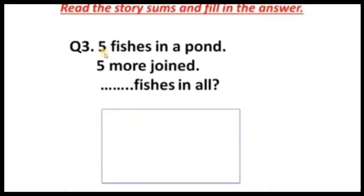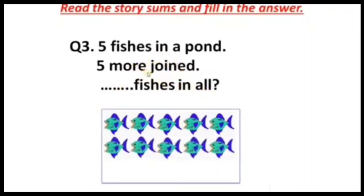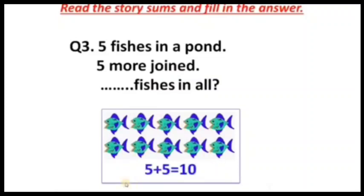Five fishes in a pond. Five fishes are there, then five more fishes joined. 'Dash fishes in all' — how many total? First five fishes are there and five more fishes are joined. Count: one, two, three, four, five, six, seven, eight, nine, ten. The sentence is five plus five equals ten. First five fishes plus five fishes equals ten total fishes.